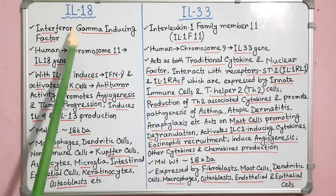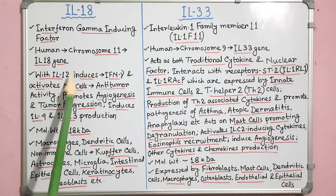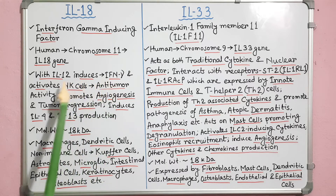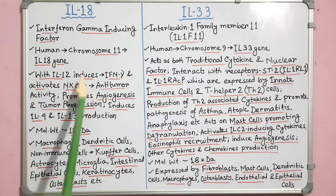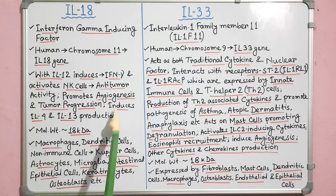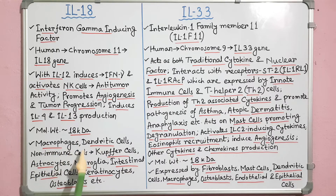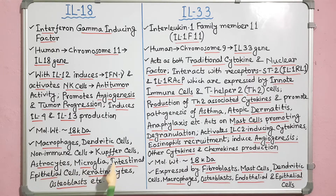Interleukin-18 is also known as interferon-gamma inducing factor. It is encoded by the IL-18 gene of chromosome 11 in humans. In association with IL-12, it induces IFN-gamma and activates NK cells — functions important for its anti-tumor activity. It also promotes angiogenesis and tumor progression, and can induce IL-4 and IL-13 production. Molecular weight of biologically active IL-18 is about 18 kilodalton. IL-18 is produced by macrophages, dendritic cells, and non-immune cells such as Kupffer cells, astrocytes, microglia, intestinal epithelial cells, keratinocytes, osteoblasts, etc.